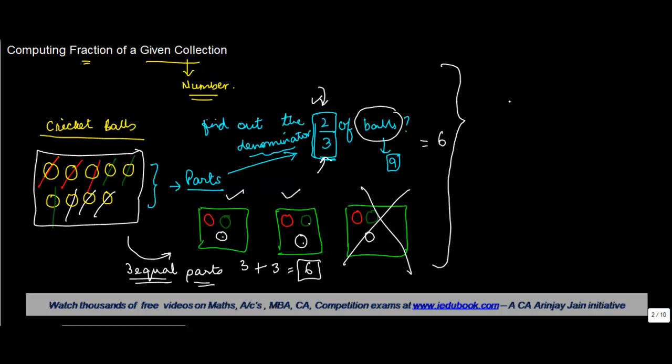Let's say I need to compute a upon b of x, which means I need to compute a particular fraction where the numerator is a, the denominator is b, and the collection contains x number of items.